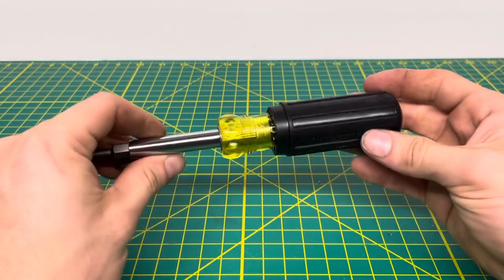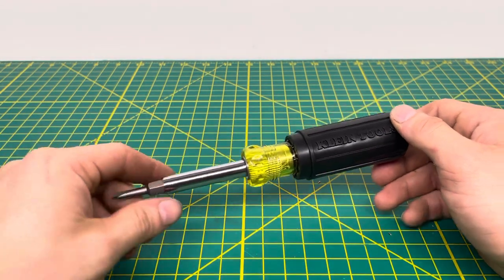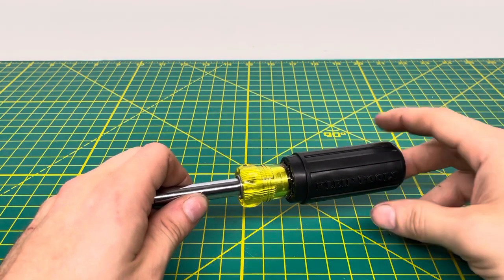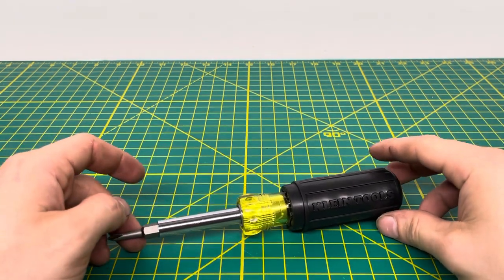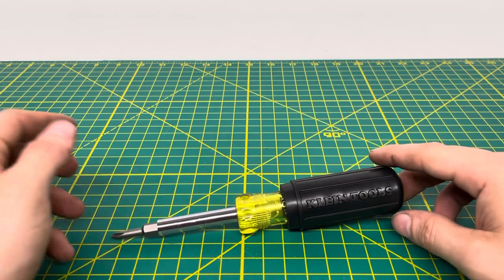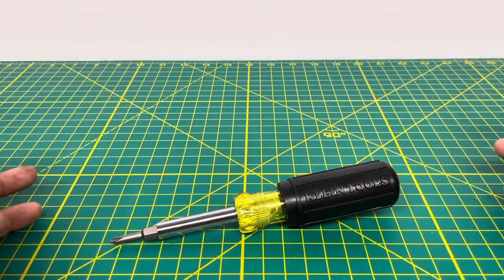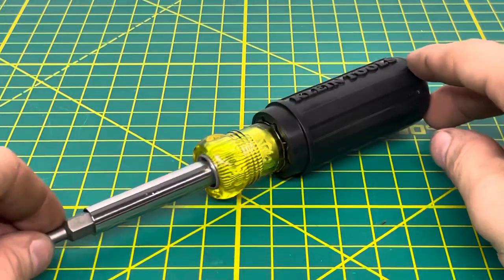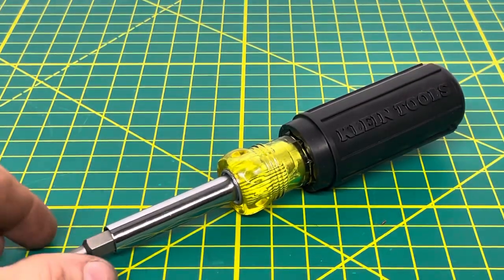It's nice Klein quality as well, and I believe it carries a lifetime warranty. I could be mistaken, but I believe it does carry a lifetime warranty against manufacturer defects. Obviously if you abuse the tool and destroy it, Klein's not going to cover it, but if something happens to the tool and it was a manufacturer defect, you can definitely send it in for warranty and they should send you a replacement.